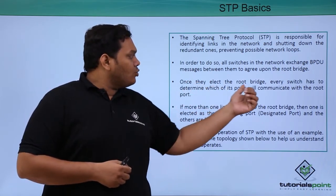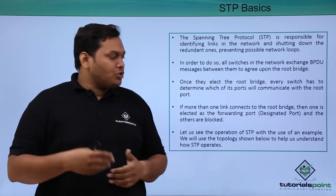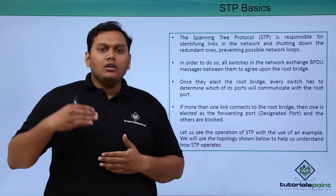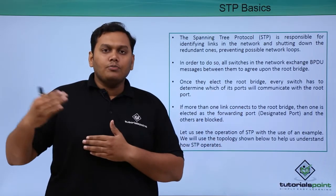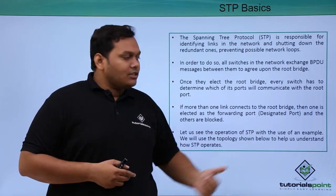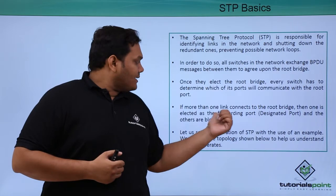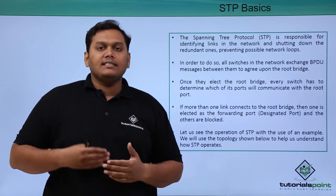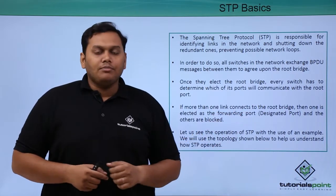Once they elect the root bridge, every switch has to determine which of the ports will communicate with the root bridge — that is called the root port. If more than one link connects to the root bridge, then one is elected as a forwarding port called the designated port and the others are blocked.